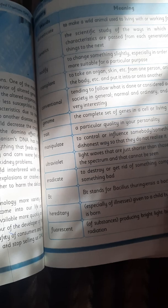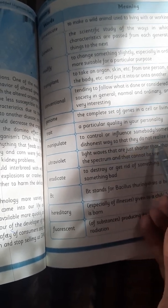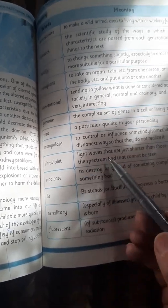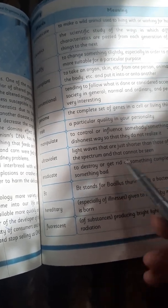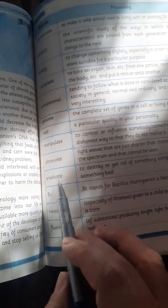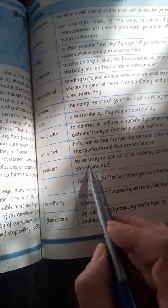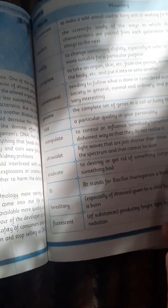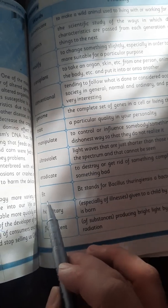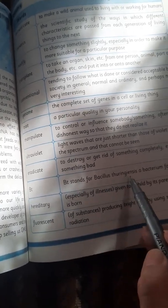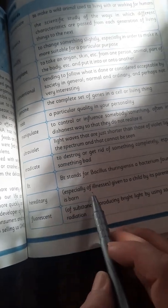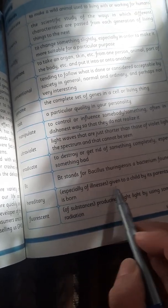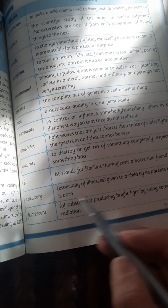Ultraviolet: light waves that are just shorter than those of the violet light in the spectrum and that cannot be seen. Eradicate: to destroy or get out of something completely, especially something bad. Bt: stands for Bacillus thuringiensis, the bacterium found in soil. Hereditary: especially of illnesses, given to a child by its parents before it is born.